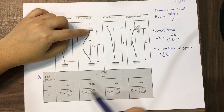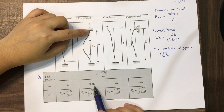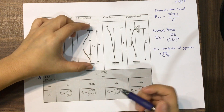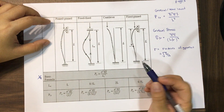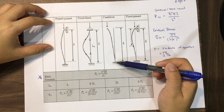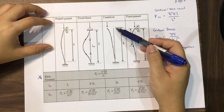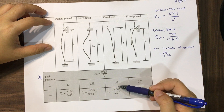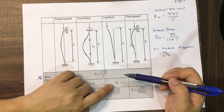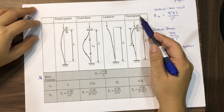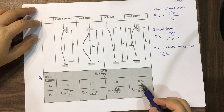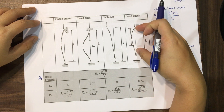For a cantilever (fixed-free) condition, the effective length is 2L, because when you draw the buckling shape it extends to twice the column length. For a fixed-pin support, the effective length is 0.7L. So you always need to check the support conditions to determine the correct effective length.